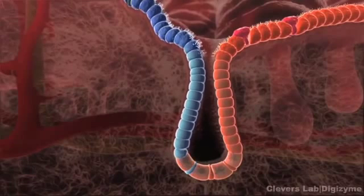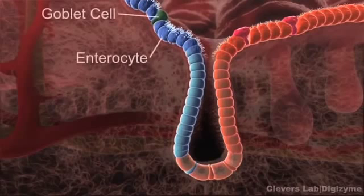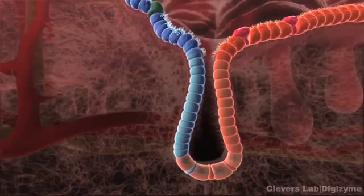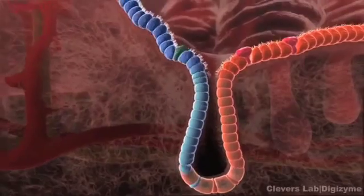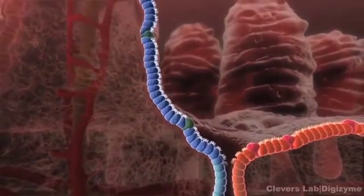As the cells migrate upwards, they begin to differentiate into goblet cells and enterocytes. While the cells are moving up the sides of the villus, they carry out the essential functions of the small intestine, notably absorption of nutrients.